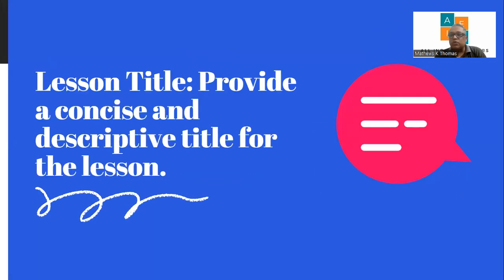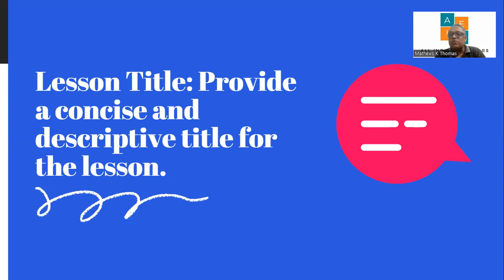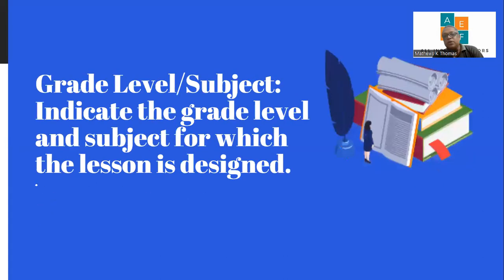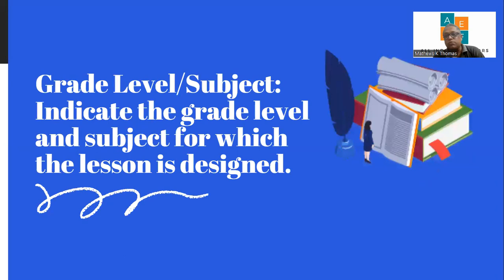The first thing is the lesson title — what we intend to provide to the student. The title has to be concise and descriptive so that someone reading the lesson plan understands what is intended to be covered. The lesson title, date, and class level are essential. We also need to indicate the subject and grade, and following Bloom's Taxonomy — all those parameters need to be there.